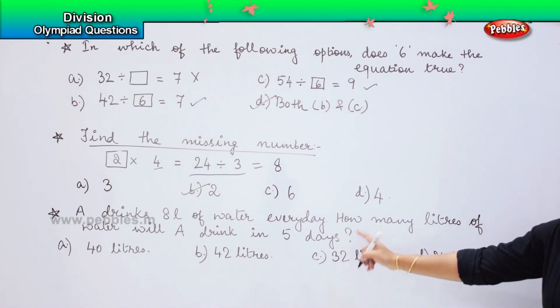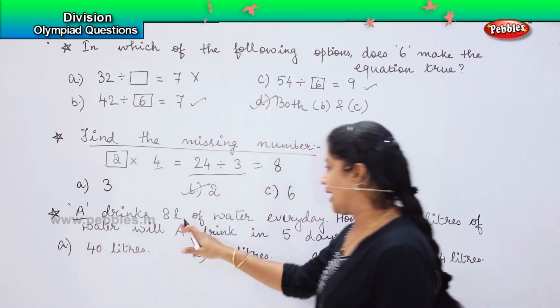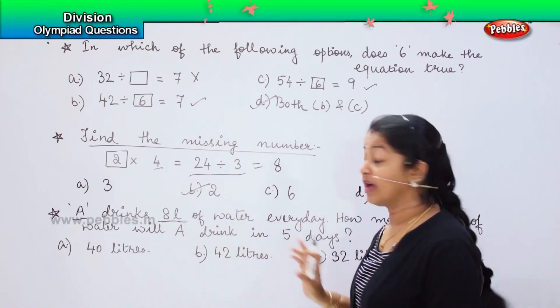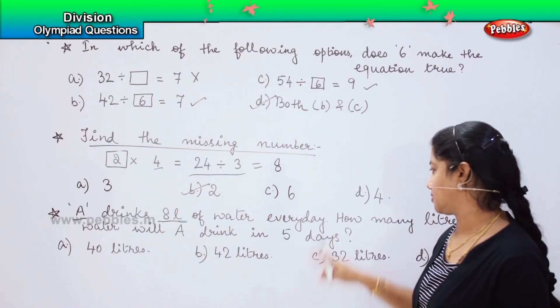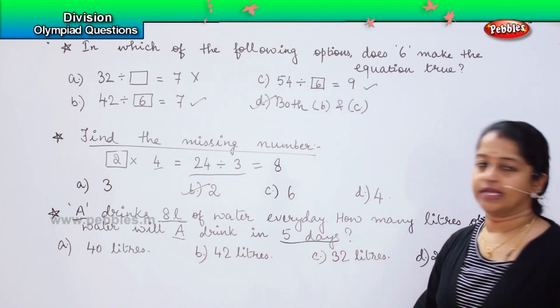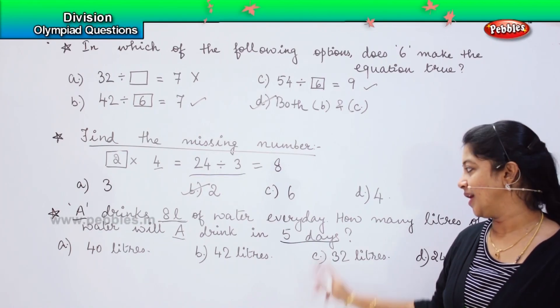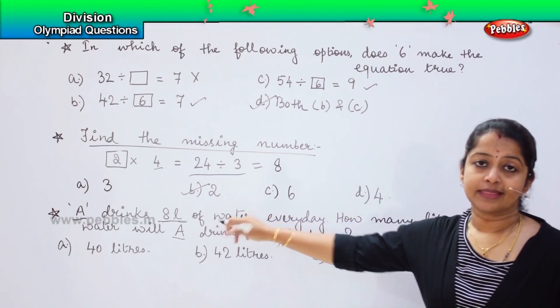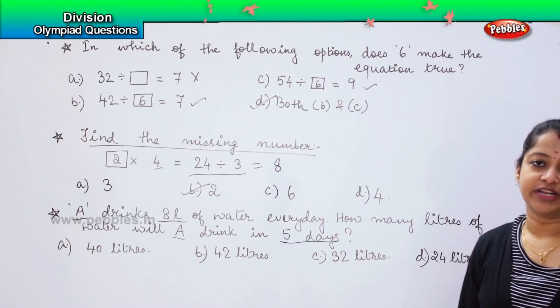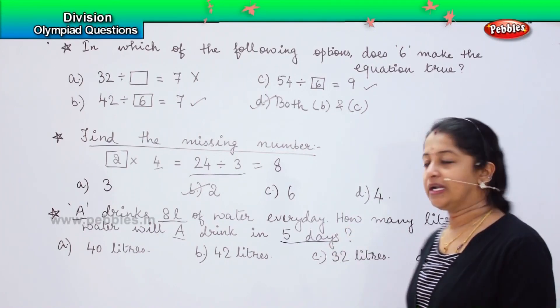The question is asked that A may be a boy or a girl, whoever he wants to assume. A is drinking 8 litres. The short form for litre is L. 8 litres of water every day. One day he drinks 8 litres. How many litres of water will A drink in 5 days? What are we supposed to do here? Division or multiplication? Very good. We need to multiply.